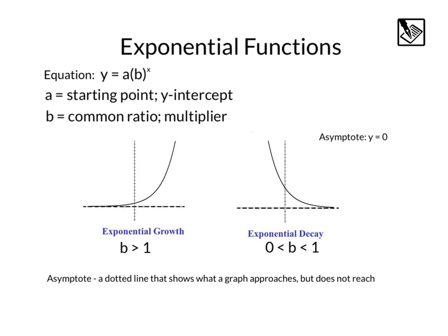For an exponential decay, that's when the graph is shrinking. That's when the value of b is in between 0 and 1 — for example, like 0.2 or 1 half. This is going to make something get smaller and smaller and smaller.